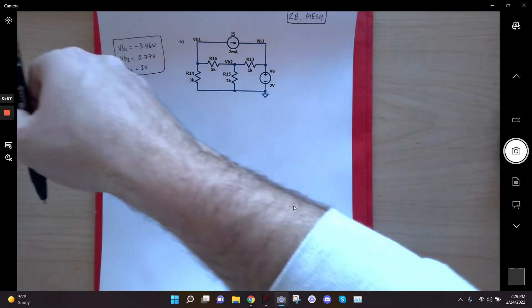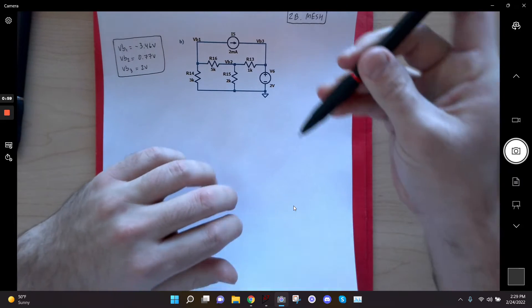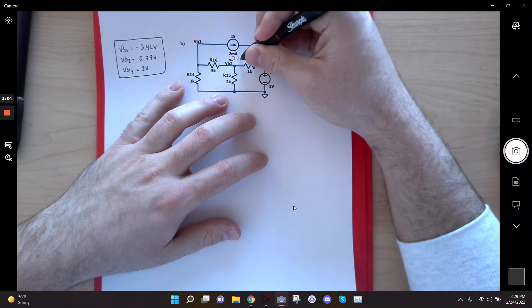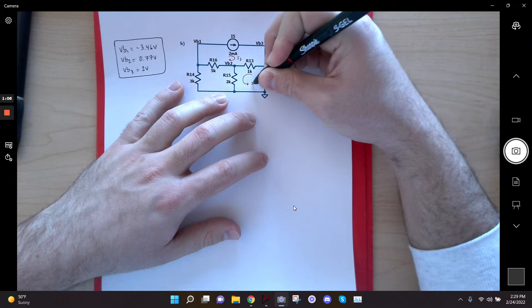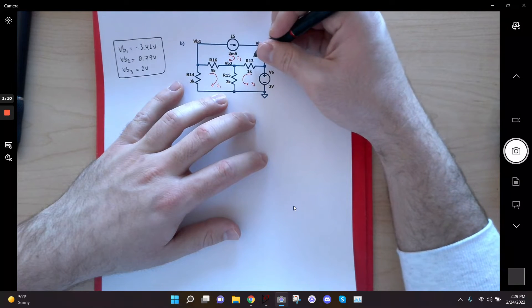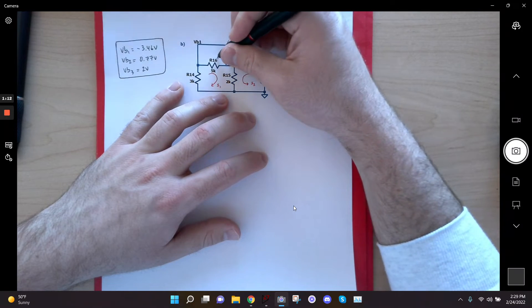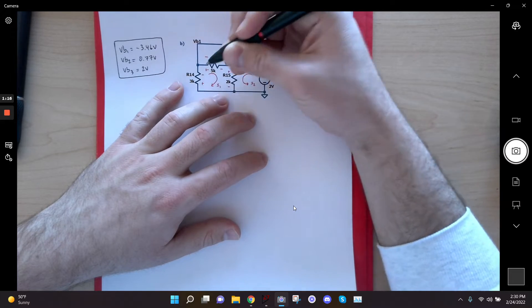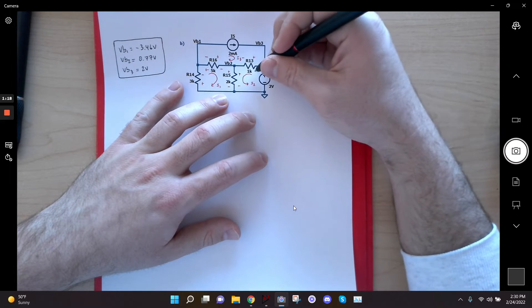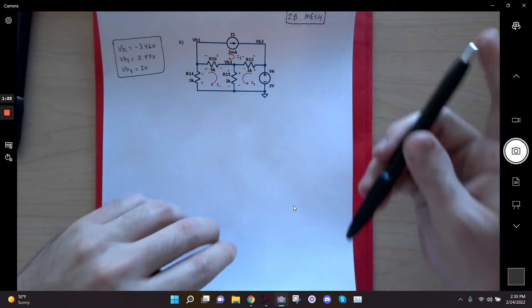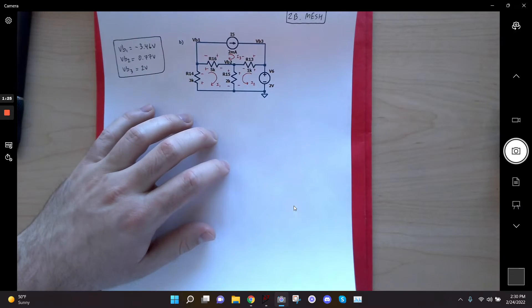Alright, so let me go ahead and define my currents. I'm going to go through this one a little bit quicker than I went through the last one since it's the exact same process. I'll call this my I3, I'll call this I2, and I'll call this one I1. I'll go with my plus minus in the direction of my currents like I do always. And now I will go ahead and start with my first equation. Well, first let me split the page just in case I need extra space.